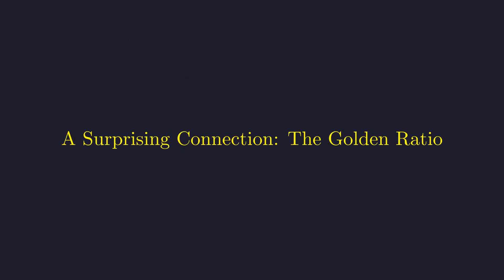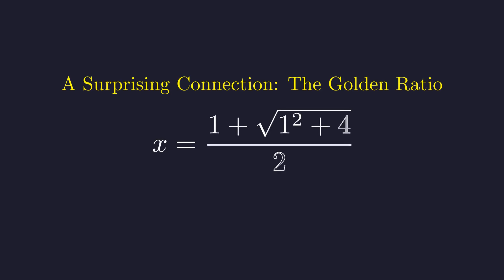Now this formula reveals something pretty amazing. What happens if we plug in n equals 1, the simplest possible case? Plugging n equals 1 into our formula, simplifying under the square root, we get 1 plus the square root of 5, all over 2.